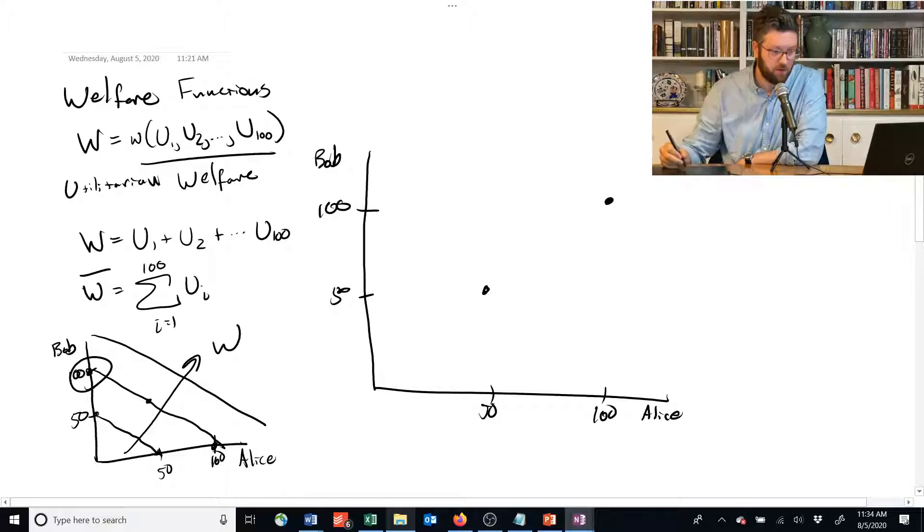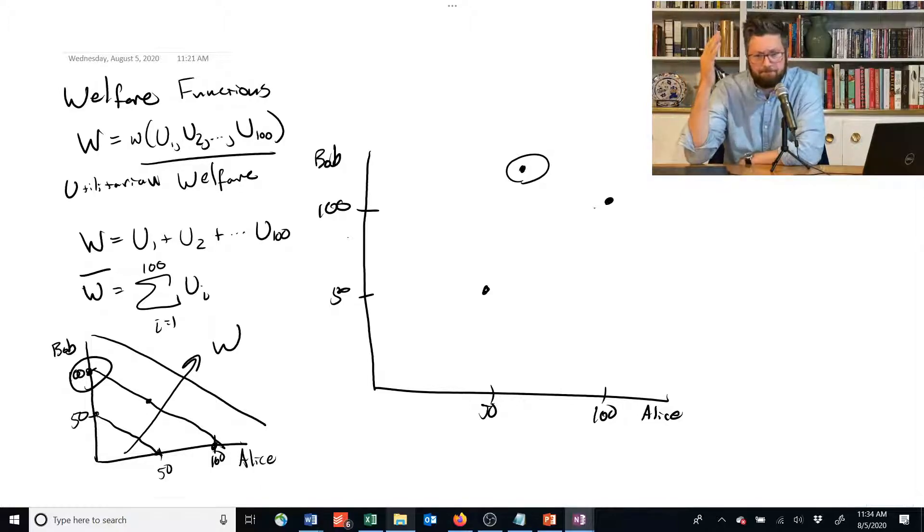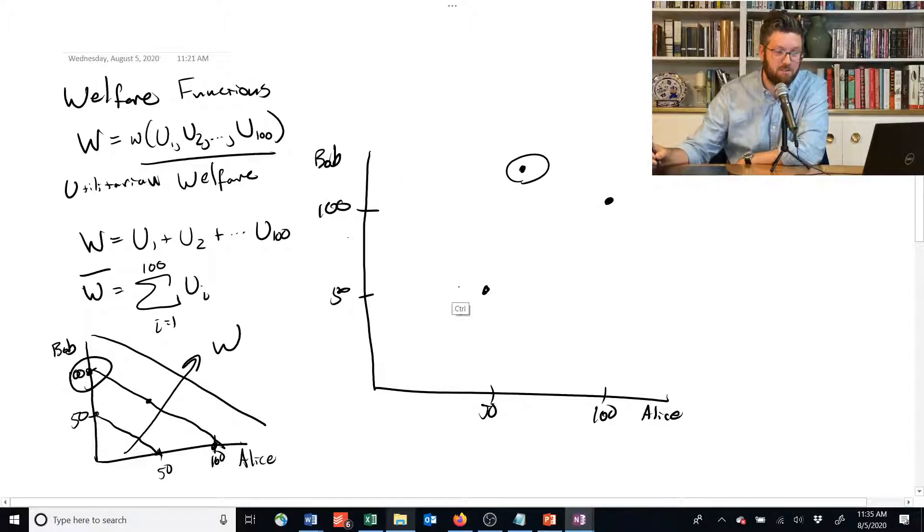And both of them would also agree with things that are uneven but better than 50-50. So for example, if we are here, this is a situation where Alice has more than 50 utility, Bob has more than 100 utility. We don't know if this is better than this. That depends on how we kind of weigh inequality. But we can at least agree that that option is better than this option, because both people are better off. And that's kind of the criteria that we're going to take.